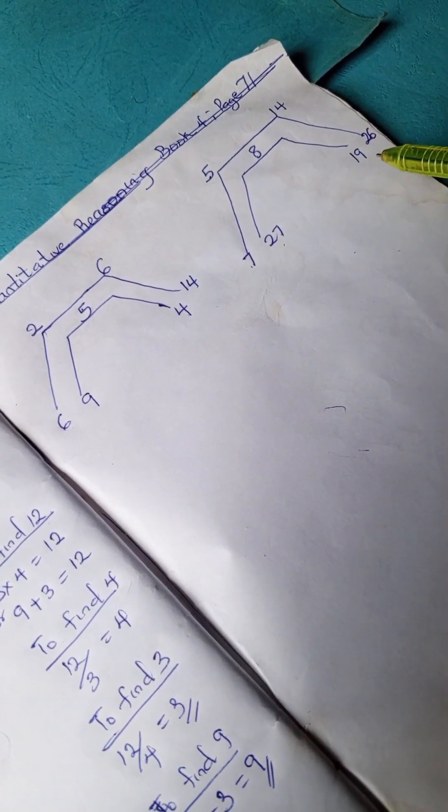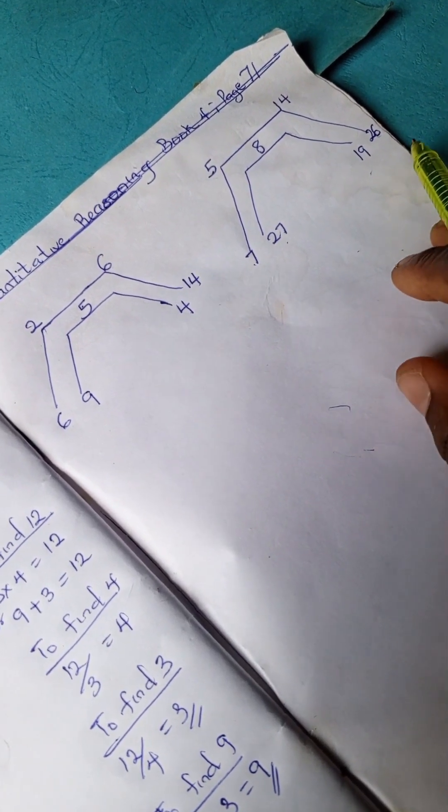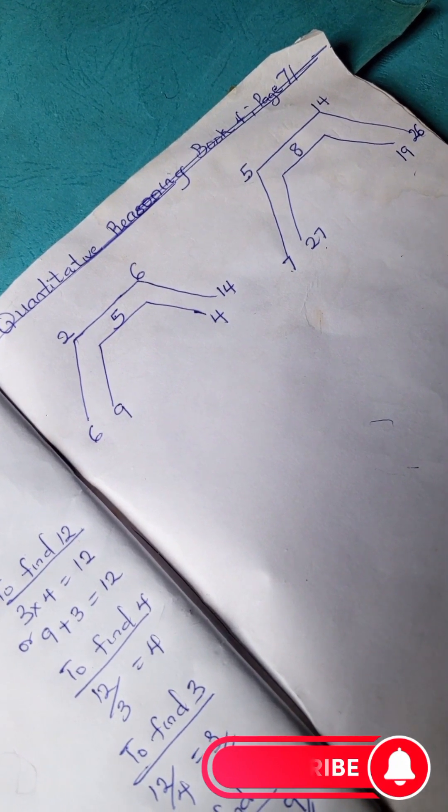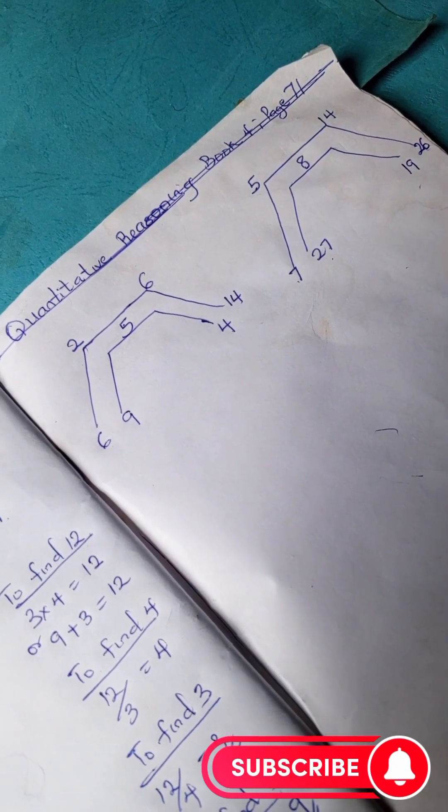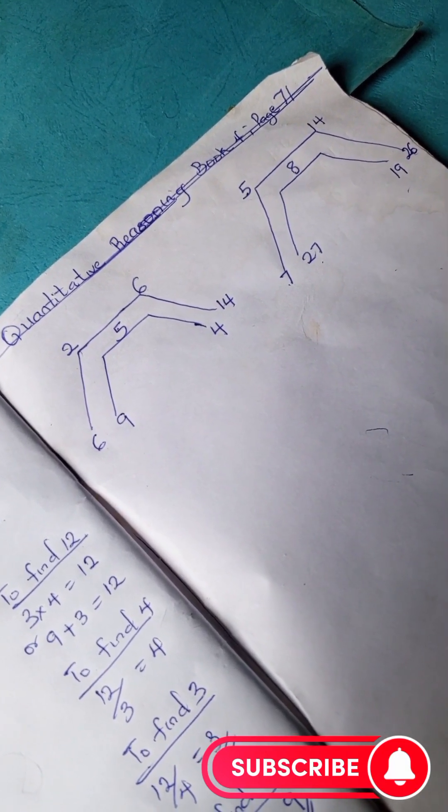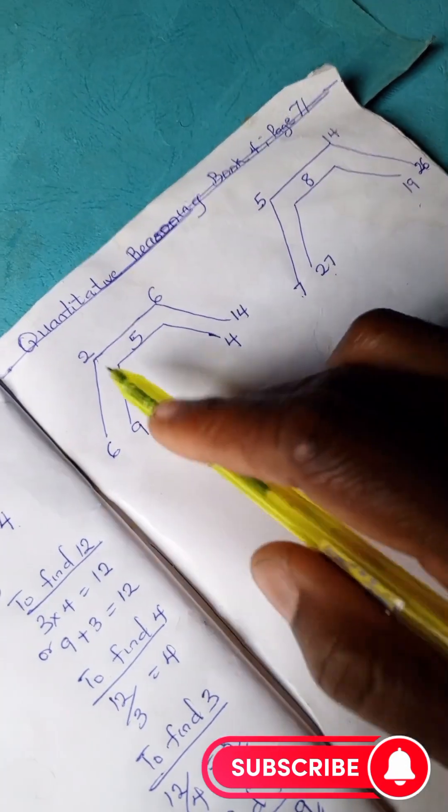We have 7, 27, 19, 26. Please subscribe to this channel for more quantitative reasoning and mathematics problems and solutions. Please kindly subscribe, I'm waiting for you. Thank you very much.